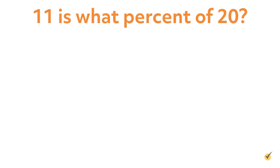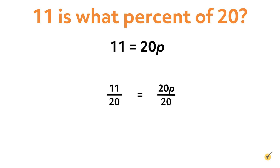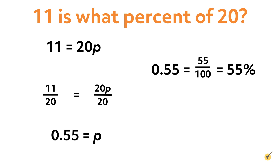Now it's your turn. Consider the following percentage problem: 11 is what percent of 20? Pause the video, convert the written equation into an algebraic equation, and solve. The algebraic equation that represents this question is 11 equals 20p. Divide both sides by 20. 11 divided by 20 equals 0.55, so p equals 0.55. Convert to a percentage: 0.55 equals 55 over 100, or 55%. Therefore, 11 is 55% of 20. Great work!